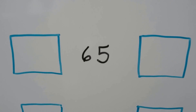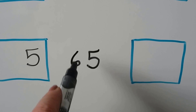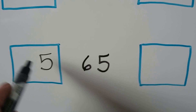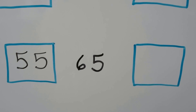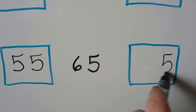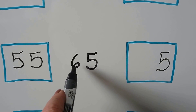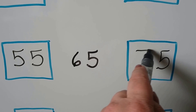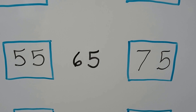How about 65? The ones are going to stay the same and it's going to be one less 10. So we can take one away from the tens place — that would be a 5, so 55. For 10 more, the ones are going to stay the same and we'd have one more 10 — 6 plus 1 more would be 7. So we have 55, 65, 75.